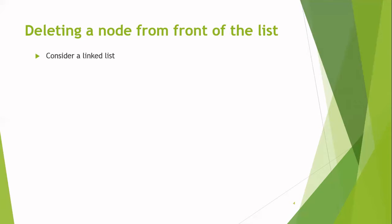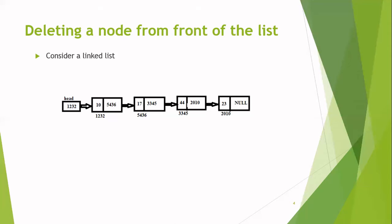Deleting a node from the front of the linked list, that is a node which is present at the beginning of the linked list. Here, I have considered a list with four nodes. As we discussed in the previous slide, first you have to find the previous node. Because you are deleting the first node from the linked list, there is no previous node to this node. So here you have to assume the header itself as the previous node.